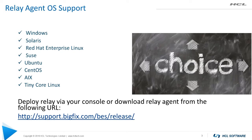The relay agent can be installed on a variety of operating systems, giving you more flexibility to integrate the relay on an operating system of your choice. You can install the relay agent on all recent flavors of Windows operating systems, both desktop and server flavors. There are also relay agents available for Solaris, Red Hat Enterprise Linux, SUSE, Ubuntu, CentOS, AIX, and even Tiny Core Linux for those that really desire a tiny footprint.